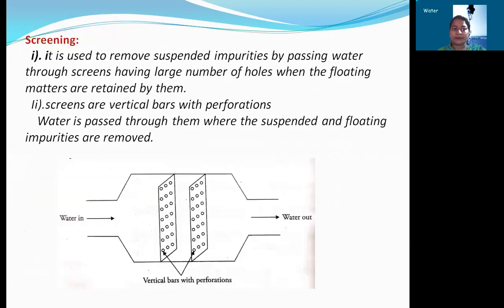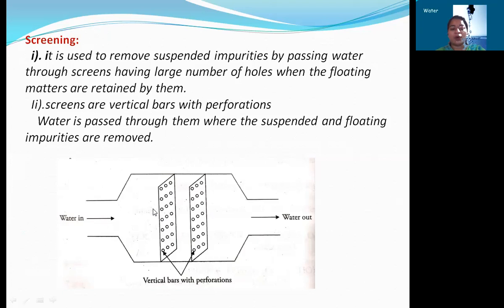Let's see first what is screening. It is used to remove suspended impurities by passing water through screens having a large number of holes, when the floating matter is retained by them. The screens are vertical bars with perforations. Water is passed through them where the suspended and floating impurities are removed. When the hard water contains dissolved impurities and also solid materials and floating materials, and when the water is passing through these screens — which contain a large number of holes — all the floating materials and solid materials are retained by these screens. So here we can remove all the floating materials and solid materials. The water obtained from these screens is free from solid materials and floating materials.